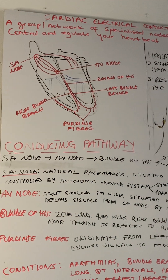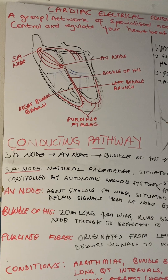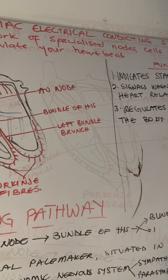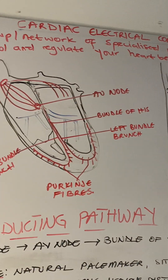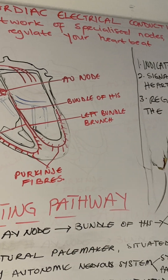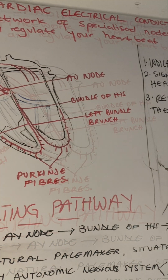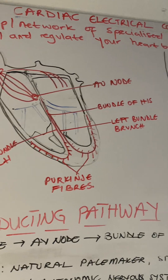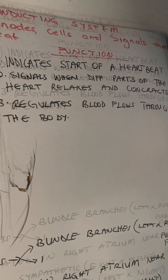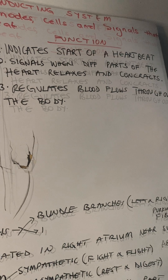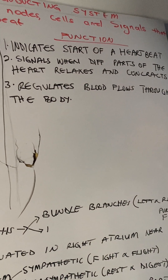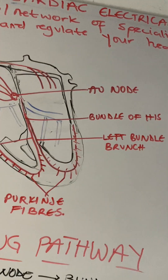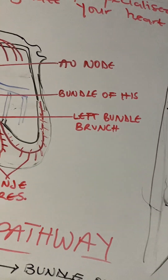So what is the cardiac conducting system? The cardiac conducting system is a network of specialized nodes, cells, and signals that control and regulate your heartbeat. The basic functions of this system are to initiate a heartbeat, signal when different parts of the heart need to relax and contract, and also regulate blood flow to your body.